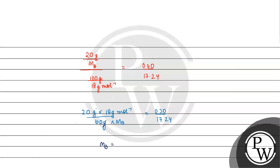M_B will be equal to 20 times 18 times 17.24 divided by 0.30 times 100, in units of grams per mole. When we solve it, the result comes out to 206.88 grams per mole.